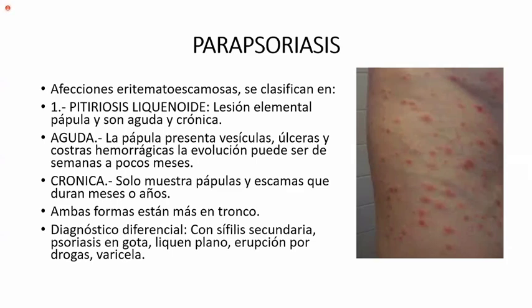La forma aguda: la pápula se presenta con vesículas, úlceras y costras hemorrágicas. La evolución puede ser de semanas a pocos meses; hay polimorfismo. Por irritación de la piel aparecen vesículas, úlceras que se llenan de costras. La crónica solo muestra pápulas y escamas que duran meses o años. A veces médicos no dermatólogos pueden confundirla con hongo u otras patologías.